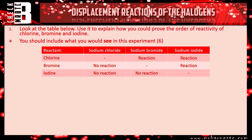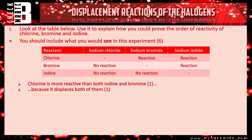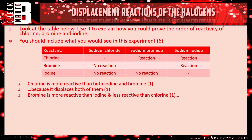Right, let's see how you've done. Question one: use the table to explain how you could prove the order of reactivity of chlorine, bromine and iodine, including what you would see. For chlorine: it reacts with both sodium bromide and sodium iodide, so it's more reactive than both — one mark for saying it's more reactive than both iodine and bromine, one mark for saying it displaces them both. For bromine: no reaction with sodium chloride but a reaction with sodium iodide, therefore bromine is more reactive than iodine but less reactive than chlorine, and it only displaces iodine.